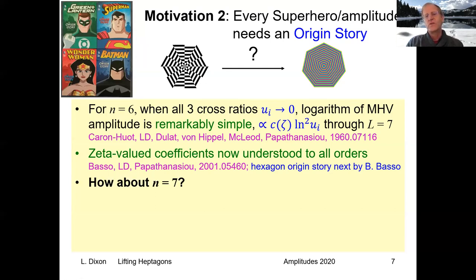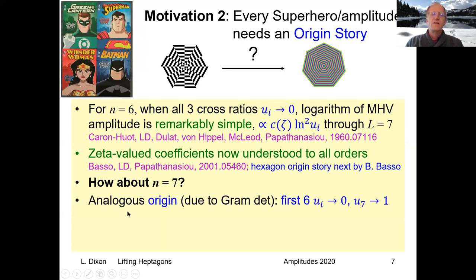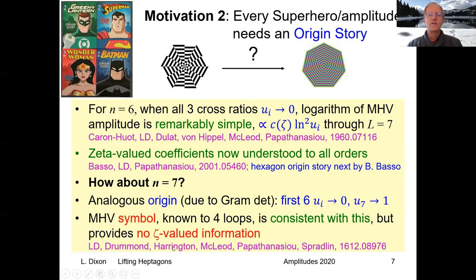Does the same sort of thing happen to the logarithm of the MHV amplitude? The problem is first we need to find an analog of the origin which is less symmetric because there's a gram determinant constraint. But there is one where you take the first six of the Ui's to zero. There turn out to be seven cross ratios but they're constrained so you have to take the last one to one. When you do that you could do it at the level of the symbol. We can go back to this four loop MHV symbol we computed a few years ago and look at it, and we conclude that the MHV symbol is consistent with this. It looks like the exponential of the one loop, but this symbol gives us no zeta value information and all the richness of this limit is in what the zeta values are doing. That's another reason to want to know what's going on beyond the symbol level.